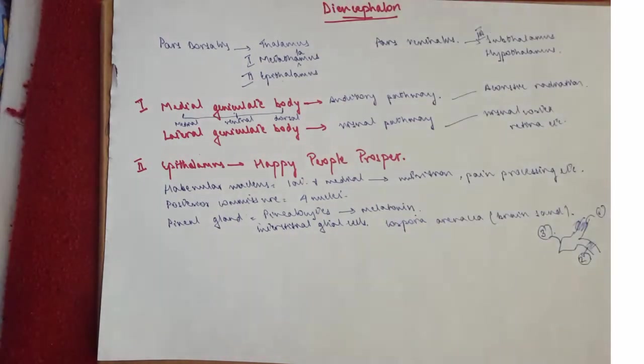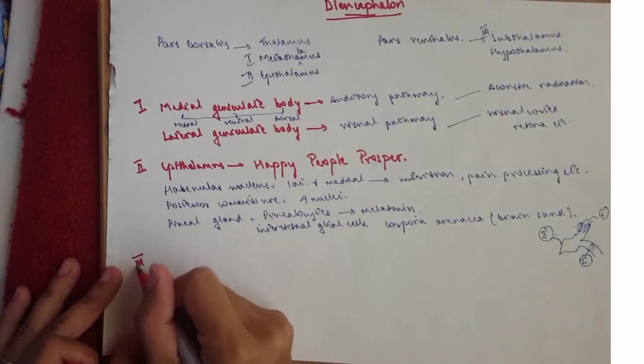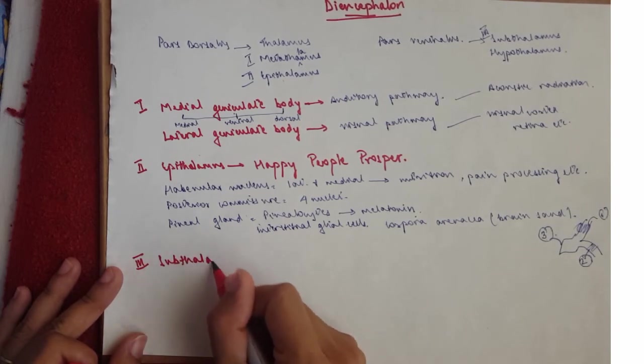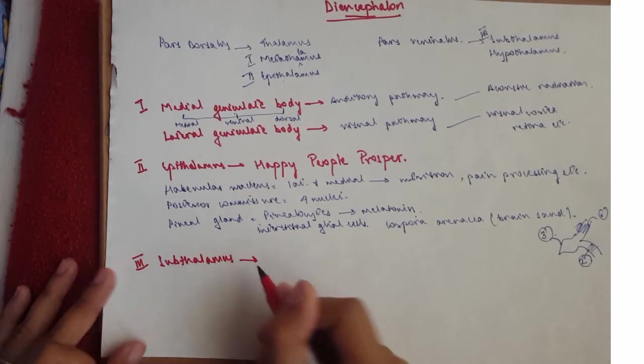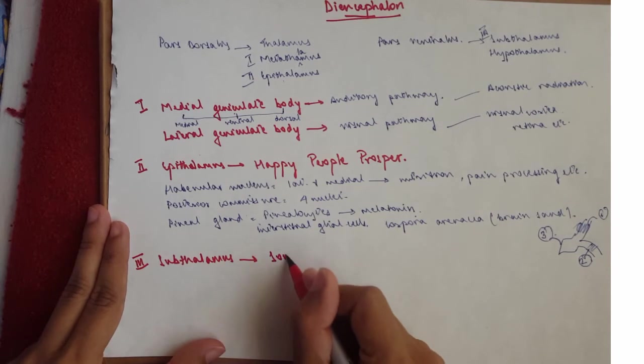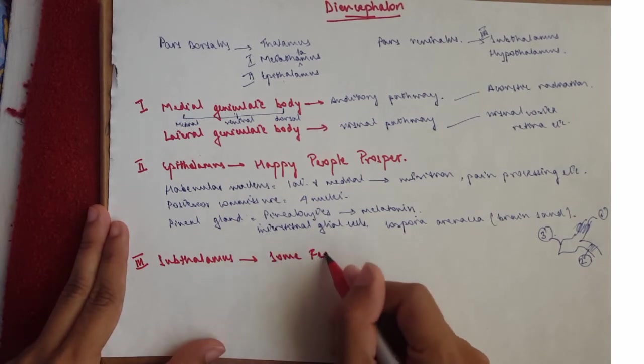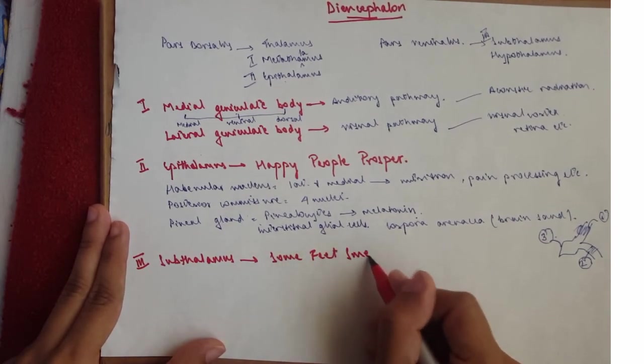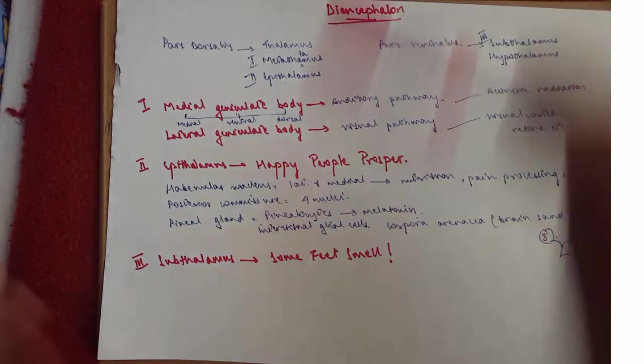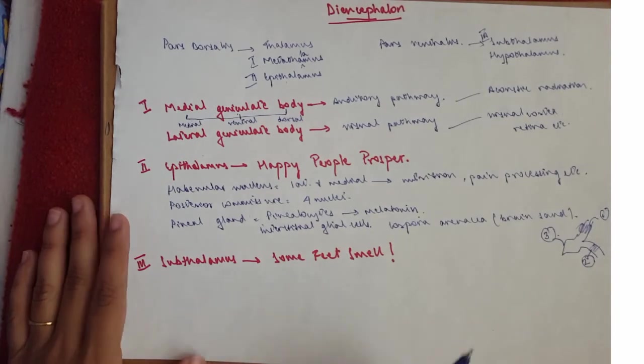Then we move on to our last bit, which is the subthalamus. So the subthalamus also has a mnemonic, and it goes Some Feed Smell. So this is also for the structures present.